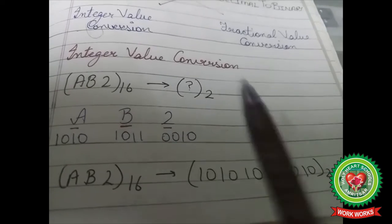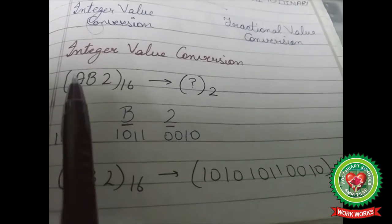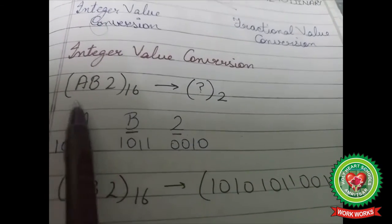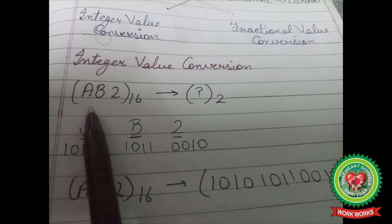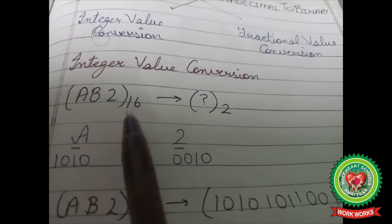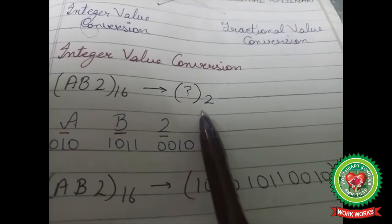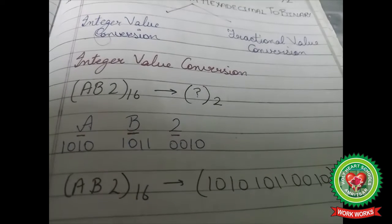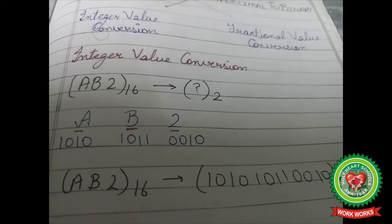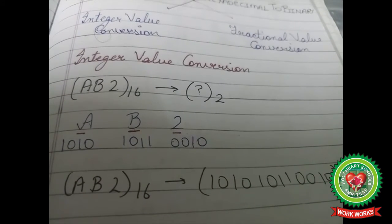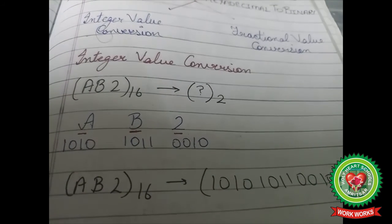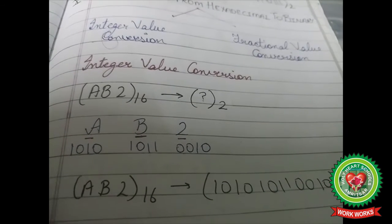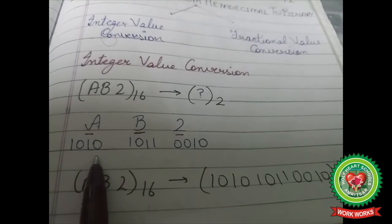Let's do this with an example. AB2 base 16 is a hexadecimal number. The binary equivalent of 2 is 0010, of B is 1011, and of A is 1010.